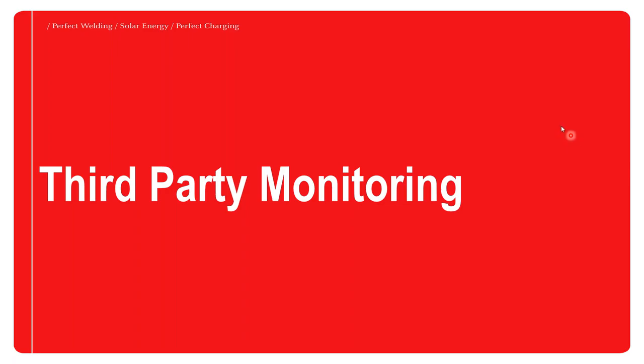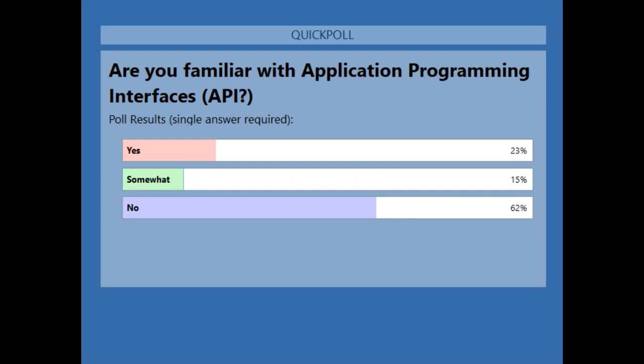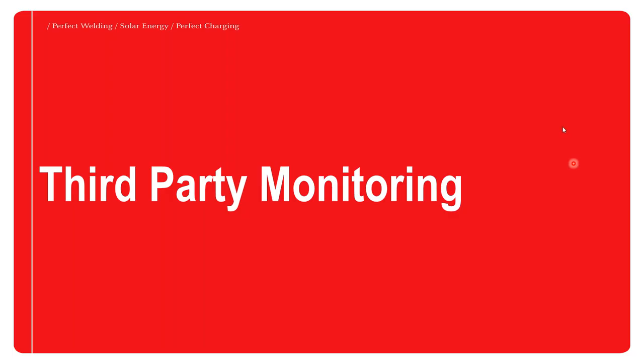Looking at the poll results: the biggest portion of our attendees — 62% — say they are not familiar with application programming interfaces. A good number at 23% say they are familiar with APIs, and another smaller portion say they have some level of knowledge. This is a great opportunity to show how you can interface third-party devices and monitoring platforms directly with Fronius SolarWeb.